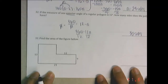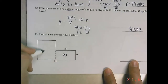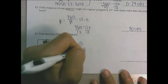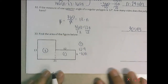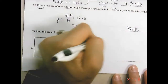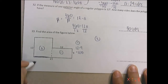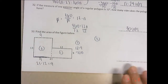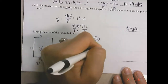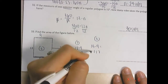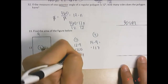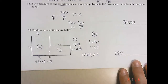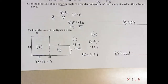For this composite figure, I'll draw a dotted line to split it into figure one and figure two. Figure one: 12 times 9 equals 108. For figure two, I need to find the base — 21 minus 12 equals 9 — so the area is 13 times 9 equals 117. Adding both areas: 108 plus 117 equals 225 units squared.